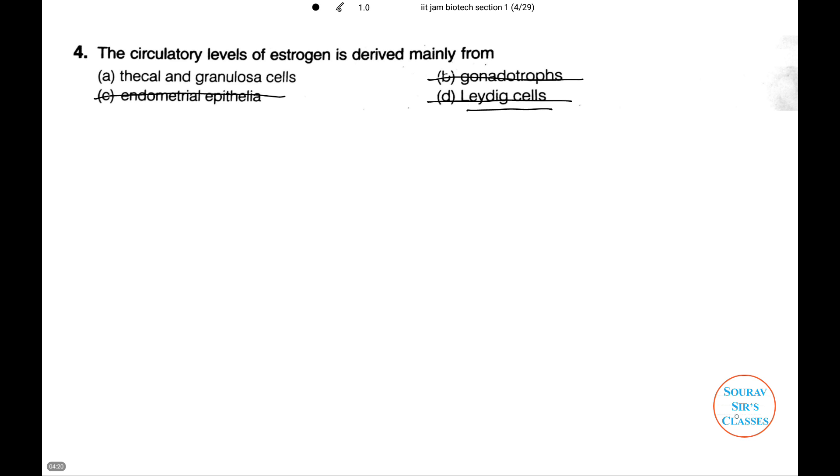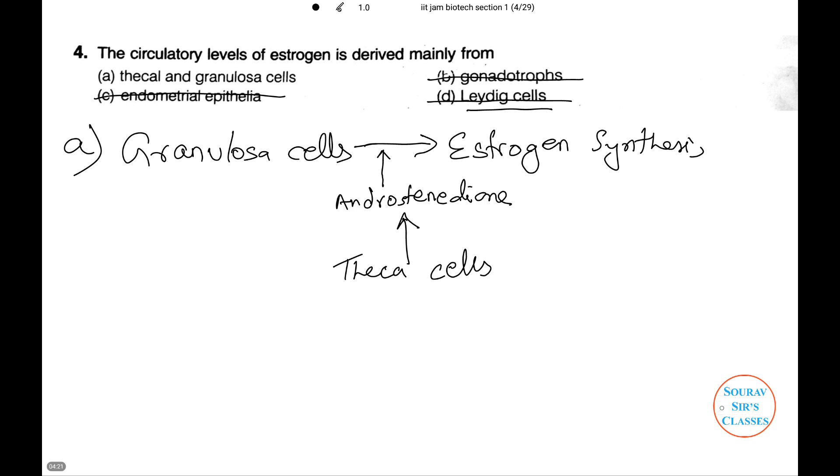Thus, we are left with theca and granulosa cells. The granulosa cells can synthesize estrogen which are derived on provision of androstenedione. These are in turn provided by the theca cells. The circulatory levels of estrogen are thus derived from the theca and the granulosa cells. Thus, the option is number A.